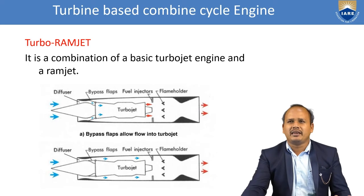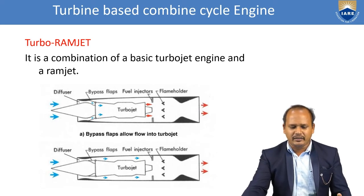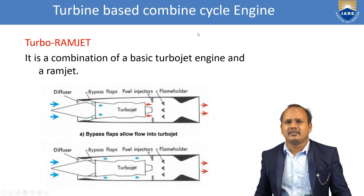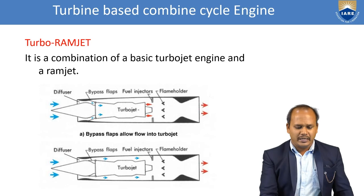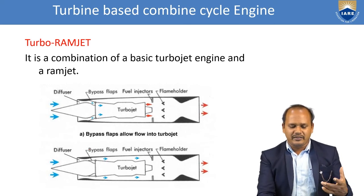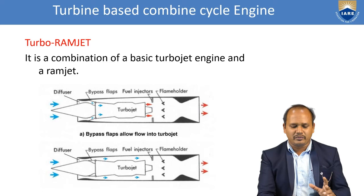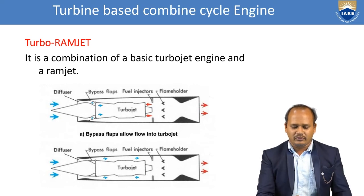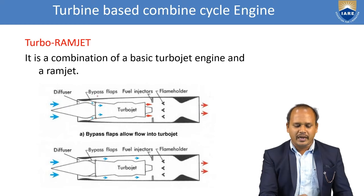The first type is the turbine-based combined cycle engine. In this, a turbojet engine is combined with either a ramjet or scramjet. Here you see a schematic of a turbo-ramjet engine. We call it a turbo-ramjet because the turbojet engine is combined with the ramjet engine. Rather than fixing them separately — which would create unnecessary complication due to space limitations in range aircraft — they are combined into a single compact engine.